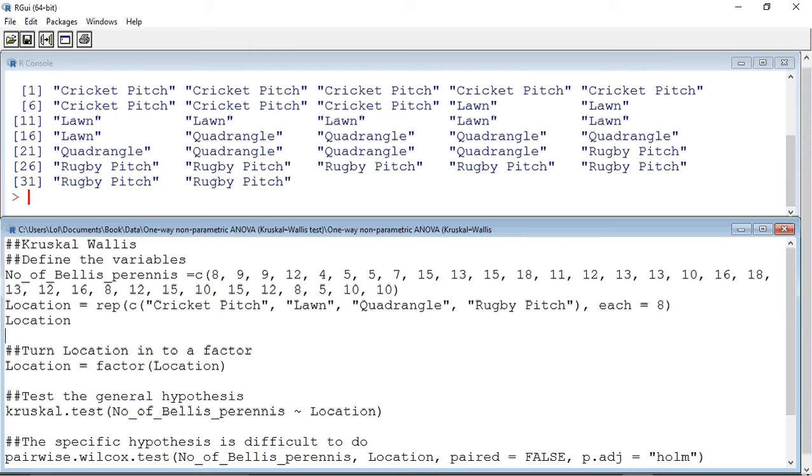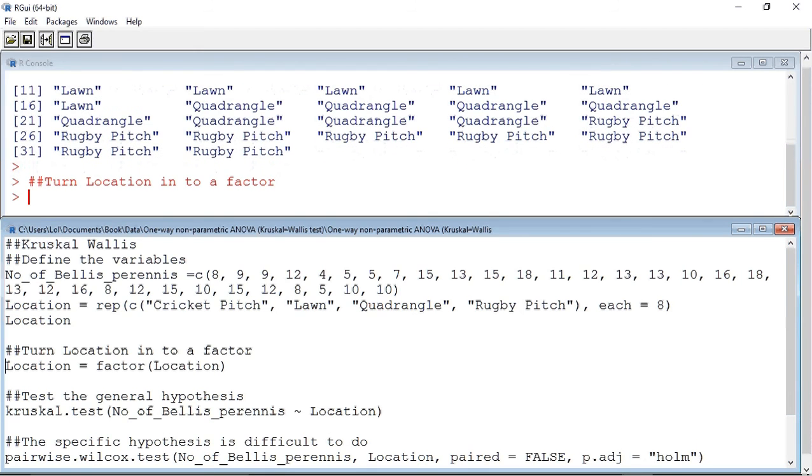Now these locations are actually factors. A factor is a variable that allows you to take your main data and split it up into samples. So we need to tell R that this is a factor. To turn it into a factor, we're going to use the factor command.